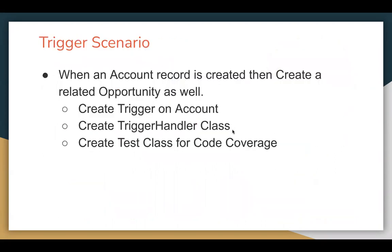Let's understand the trigger scenario first. The scenario says when an account record is created, then create a related opportunity as well. So upon creation of an account record, there should be an opportunity record created automatically with the help of a trigger. We need to create a trigger on account, then create a trigger handler class where we will implement the business logic, and then I will show you how we can implement the test class so that code can be covered.